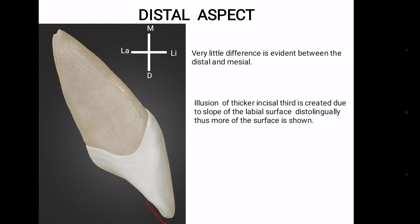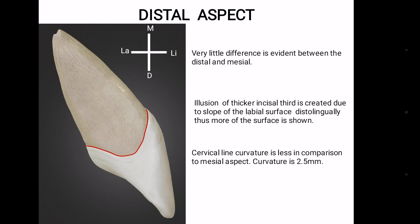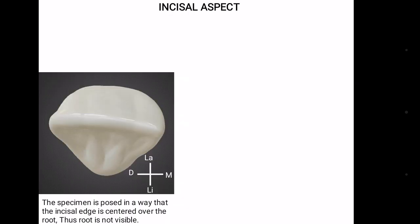Incisal third appears to be thicker due to the distal incisal angle being less sharp, due to which more of the lingual surface is seen and thus the tooth appears to be thicker at incisal third. Cervical line curvature is less in comparison to the mesial aspect and the curvature is 2.5 mm. Here the tooth is posed in a way that the root is not seen. This has happened as the root apex and incisal edge are in the same plane.